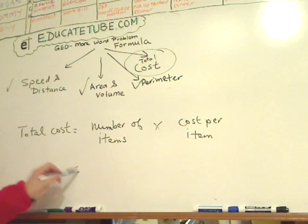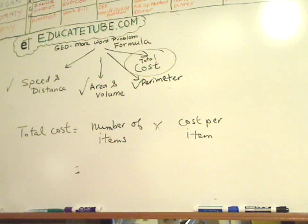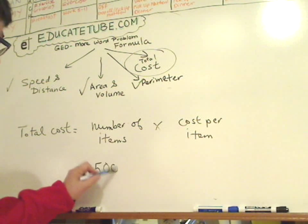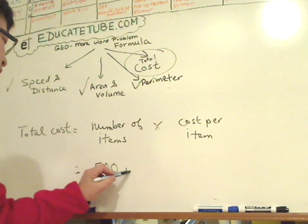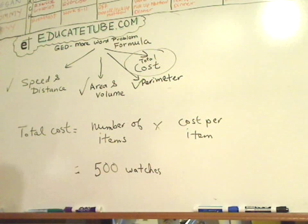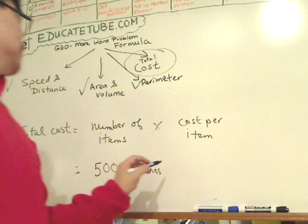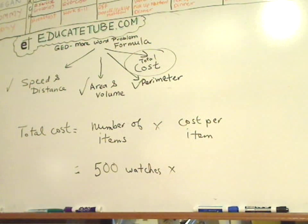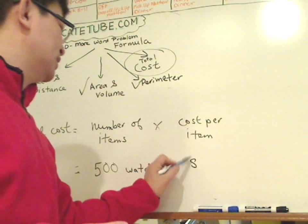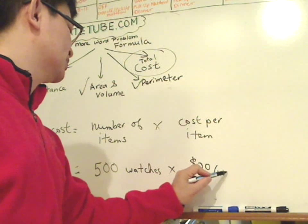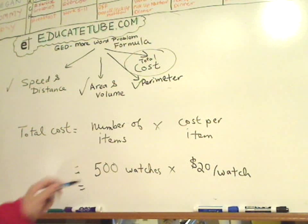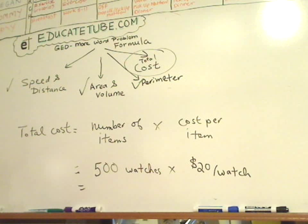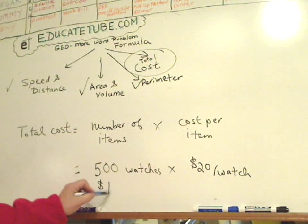As an example, you want to figure out how much it's going to cost you. Let's say you had 500 watches. Multiply by the cost of the watch — let's say you bought it for $20 per watch. So how much did it cost you? It's 500 times $20, so that'll give you $10,000.